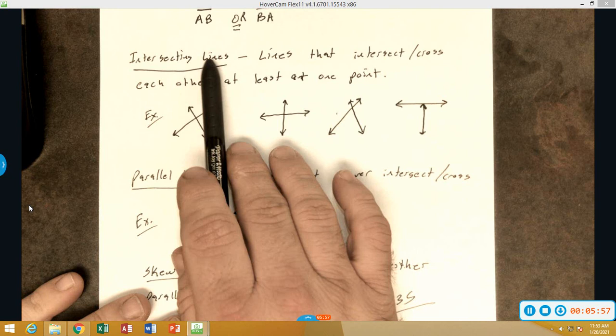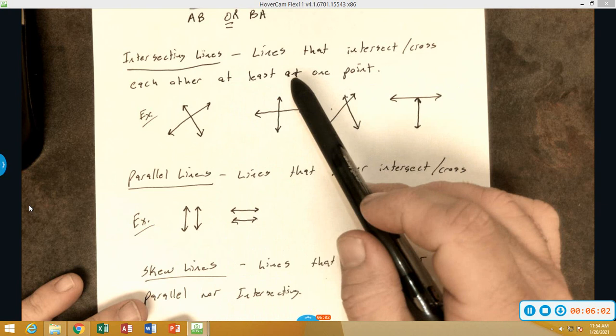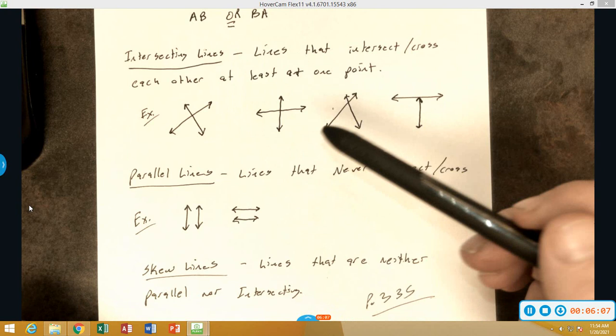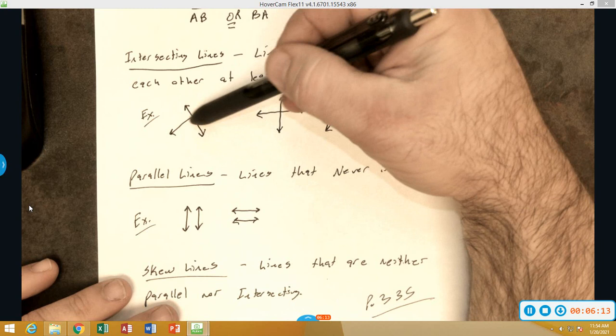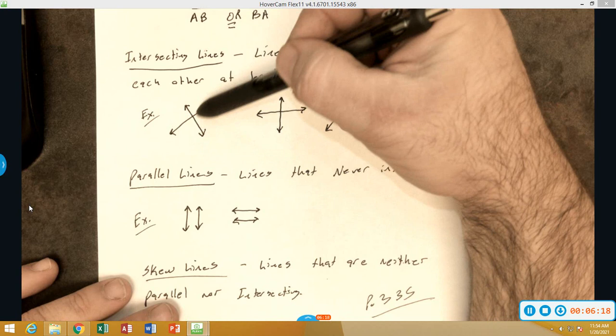When we talk about lines that intersect, they're lines that intersect or cross each other at least at one point. Some real world examples of intersecting lines could be an intersection. Like, for example, right here, imagine that this is a four-way stop. There's a road going this way and a road going this way. This is the intersection in which the two roads meet.